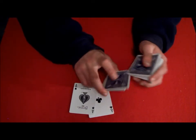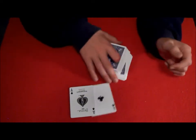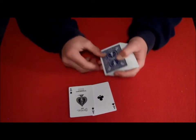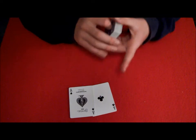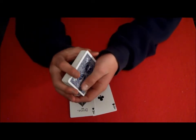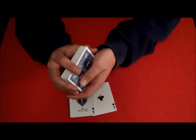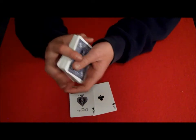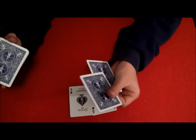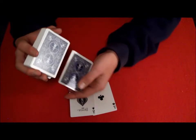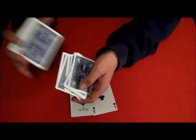So false cuts or whatever. It's still on top. Then what we're going to do is an overhand shuffle, but you're going to peel the top and the bottom card so their card is in the second position from the bottom. And then you're just going to shuffle these cards back on top.